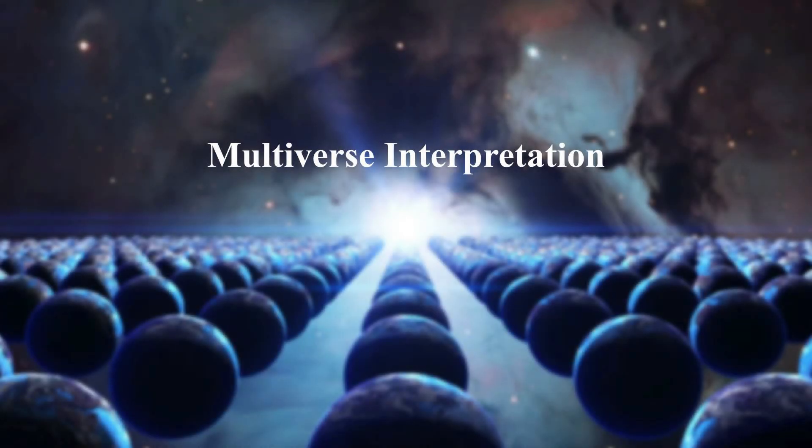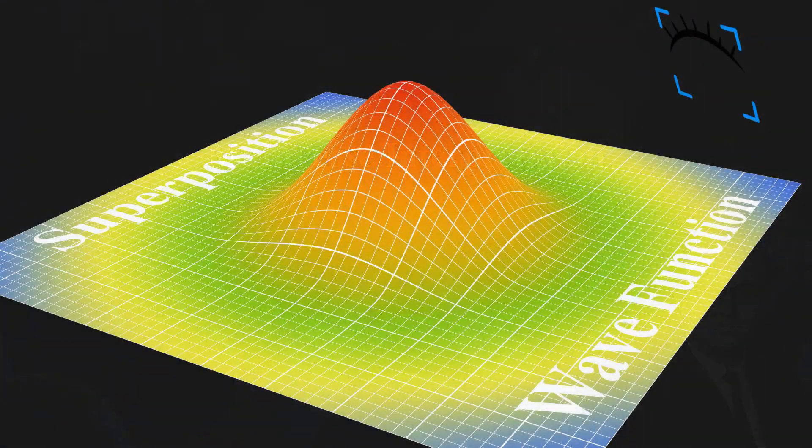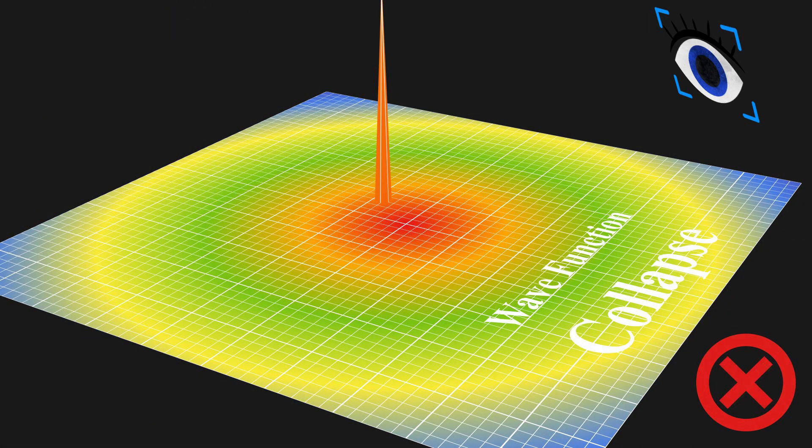Then another popular alternative, the multiverse interpretation, came into my view. It was proposed by Hugh Everett in 1957. This interpretation asserts that the wave function is objectively real, but there is no wave function collapse.